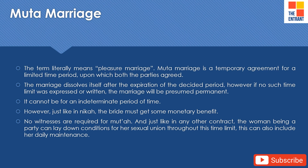A muta marriage cannot be for an indeterminate period of time. However, just like in nikah, the bride must receive some monetary benefit. No witnesses are required for a muta marriage. And just like in any other contract, the woman — being a party — can lay down conditions for her sexual union throughout this time period, which can also include her daily maintenance. Her temporary husband must respect these conditions. The marriage automatically dissolves at the end of the stated period, and no matter how short the duration was, the woman has to practice abstinence lasting up to two menstrual cycles.